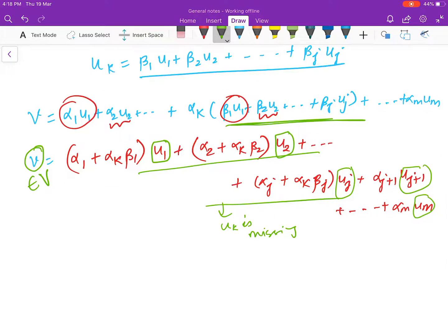So it means that the set u1, u2, ..., uk-1, uk+1, ..., um spans V. This is the result which helps us to take out the unnecessary elements from your spanning set because you want to keep it as small as possible. Thank you.